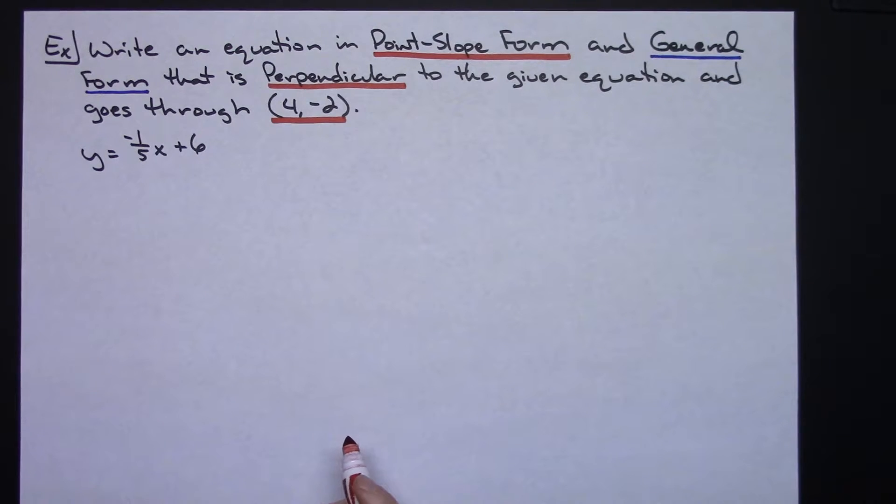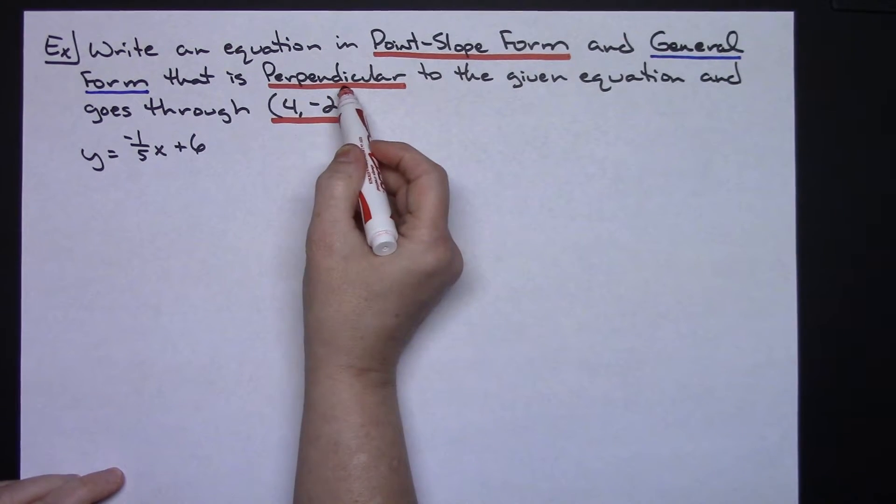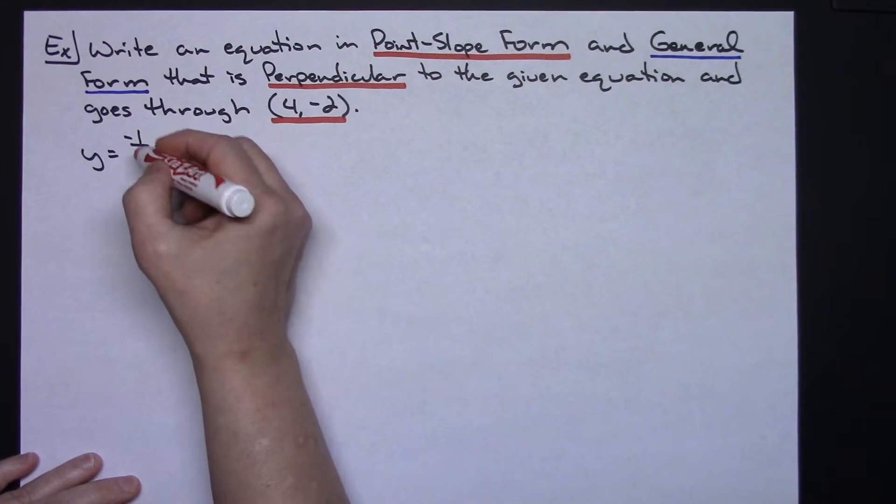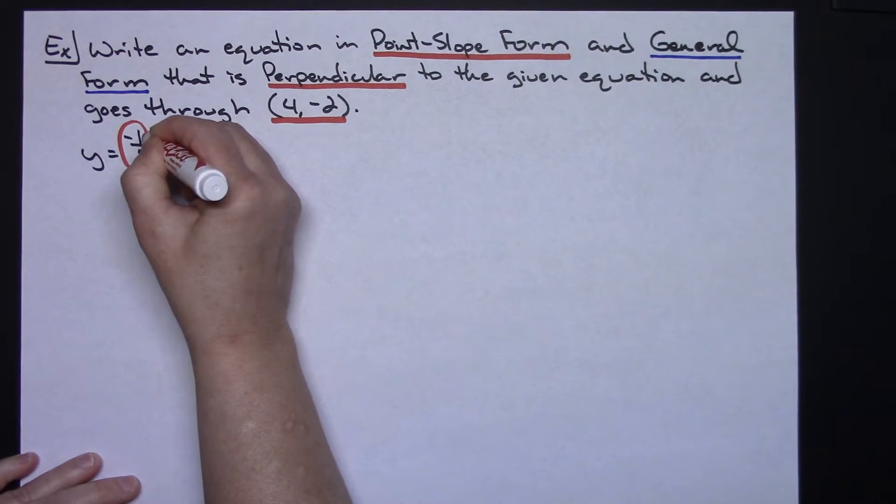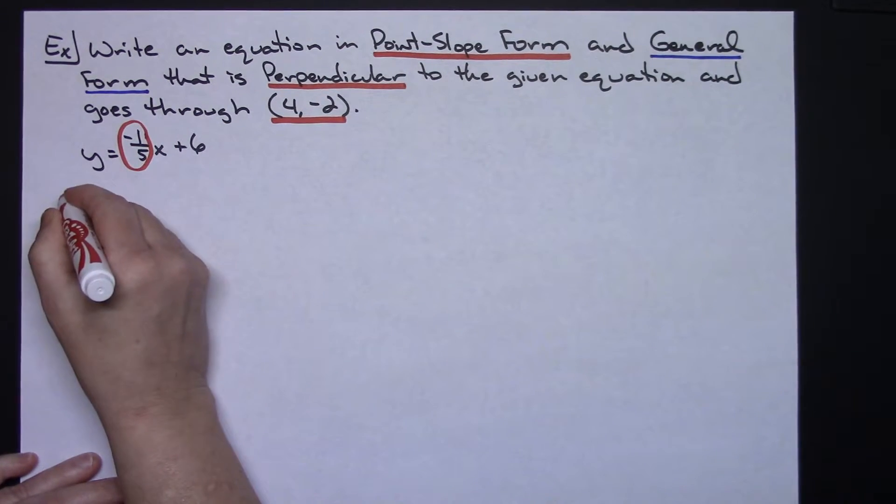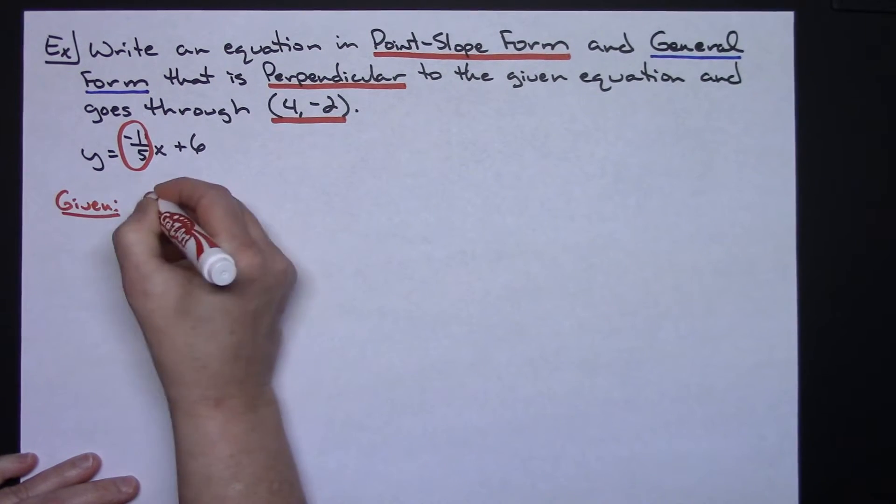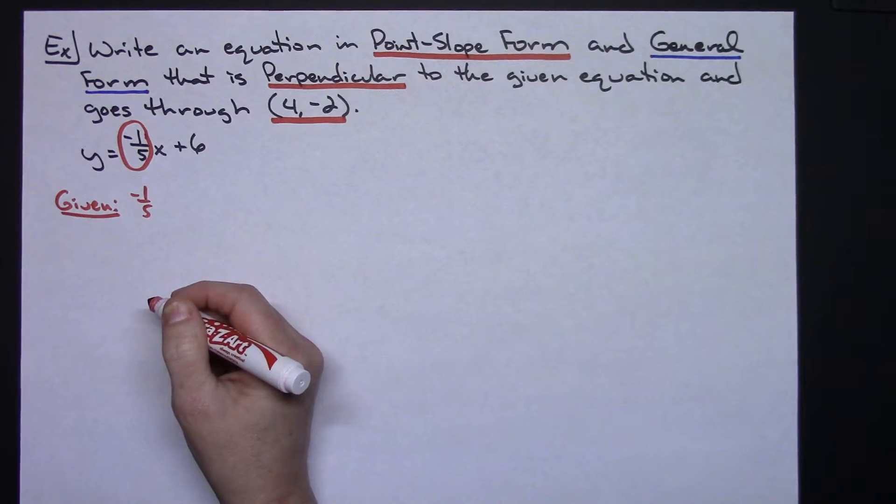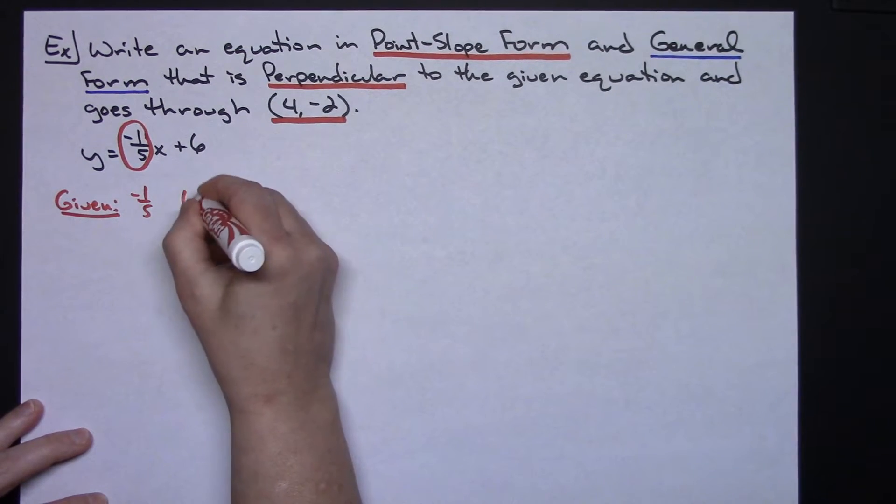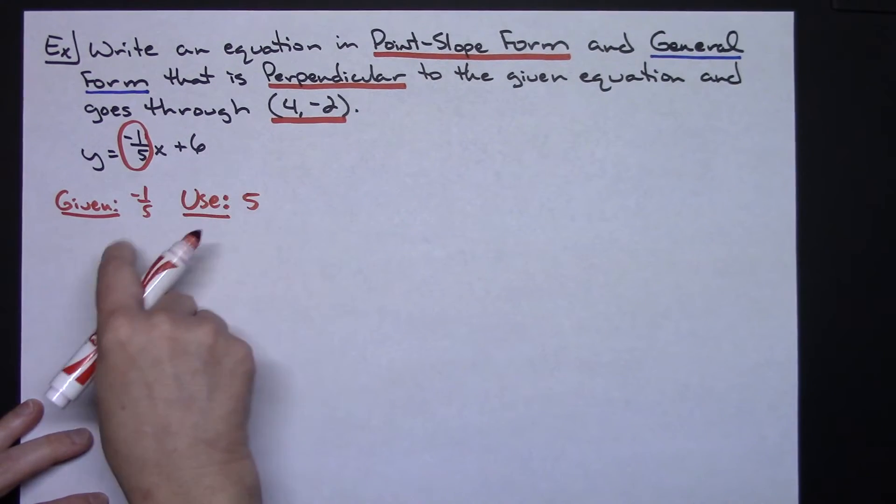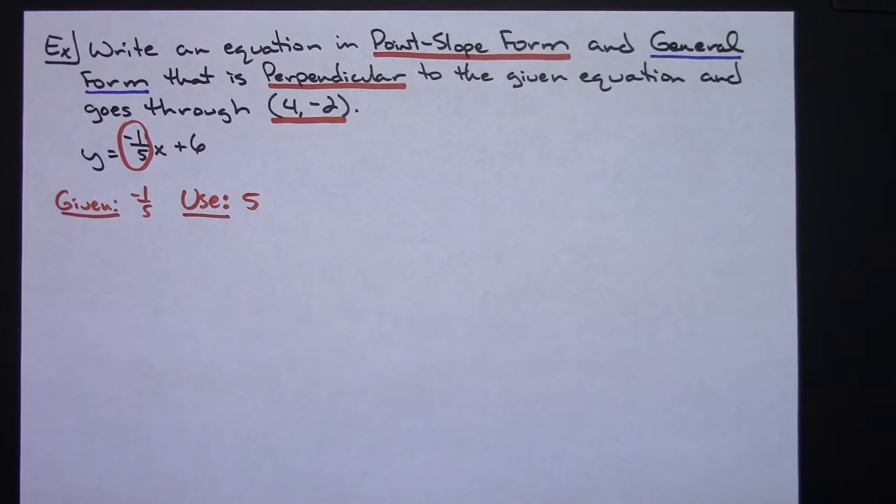Alright, so if we focus on perpendicular, you need to remember that perpendicular lines have negative reciprocal slopes. So in my given equation I've got a slope of negative one-fifth. So I'm given a slope of negative one-fifth. I need the negative reciprocal of that, so I'm going to use a positive 5. I'm going to take the reciprocal of that and switch the sign.